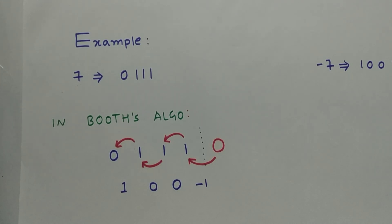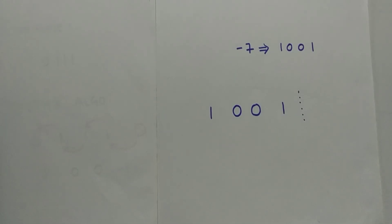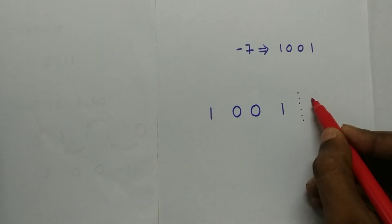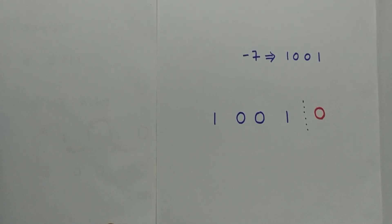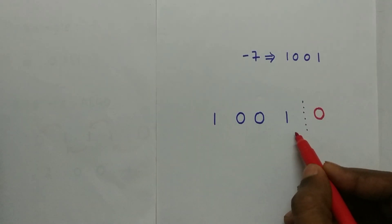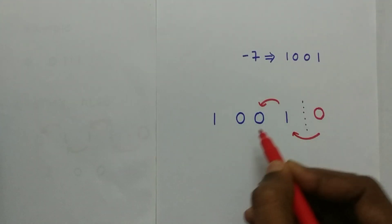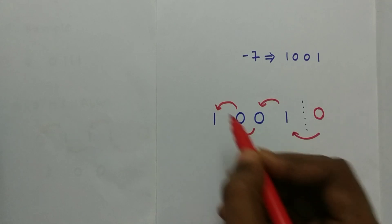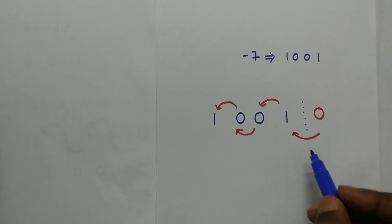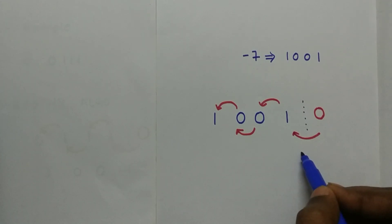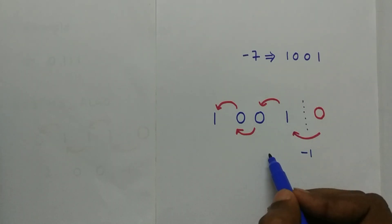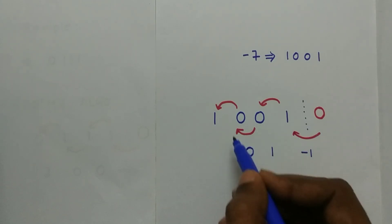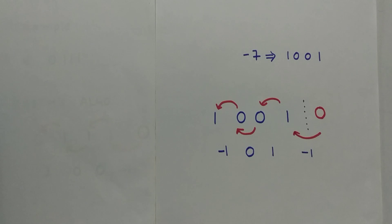Now let's take another example for better understanding. -7 is represented as 1001 in binary form. Let's convert this to Booth's algorithm form. First, add an extra 0 which has no value or weight. Moving from LSB to MSB: 0 to 1 is -1; 1 to 0 is 1; 0 to 0 is 0; 0 to 1 is -1. So -7 is represented as -1, 0, 1, -1 in Booth's algorithm form.